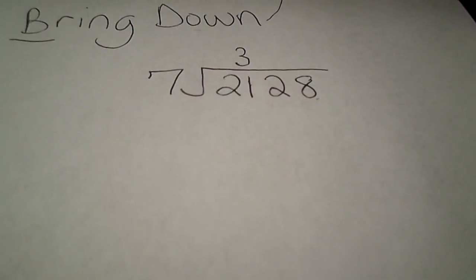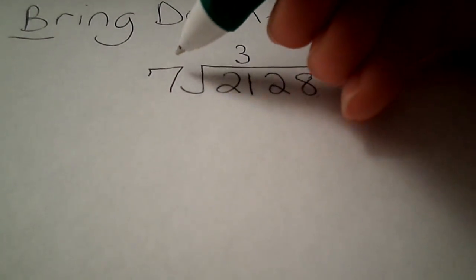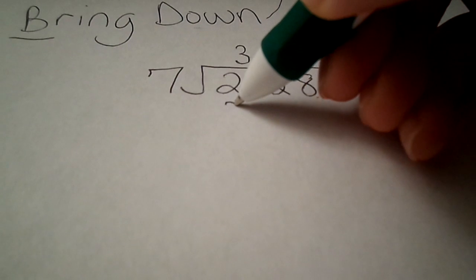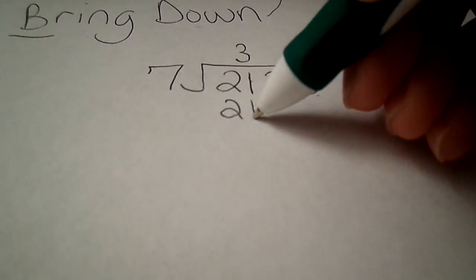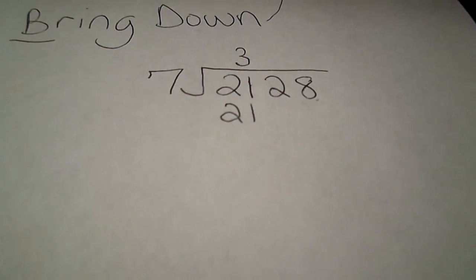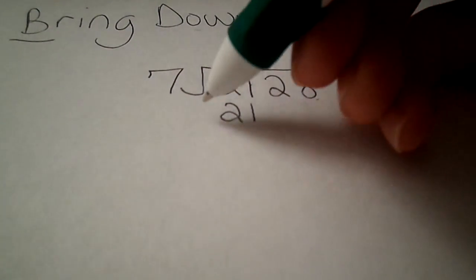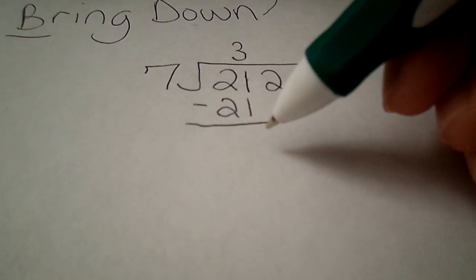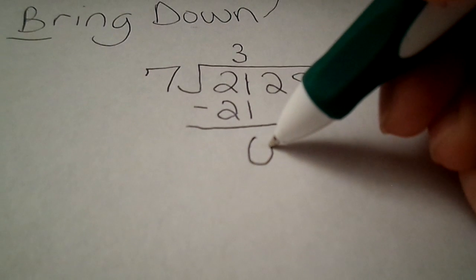What's your second step? Multiply. So 3 times 7 gives us what? 21. What's our third step? Subtract.